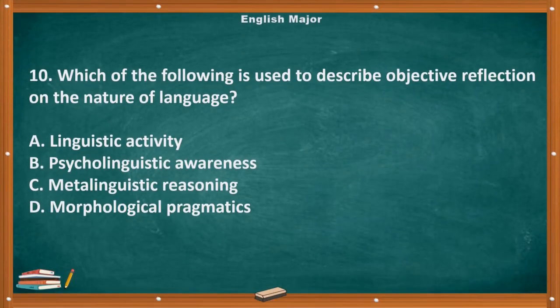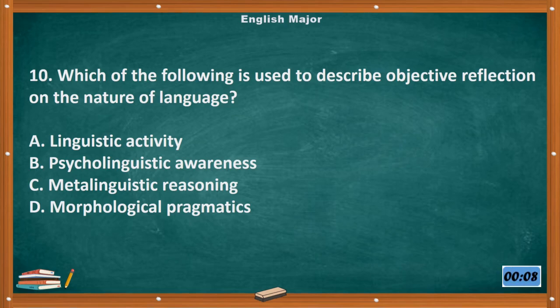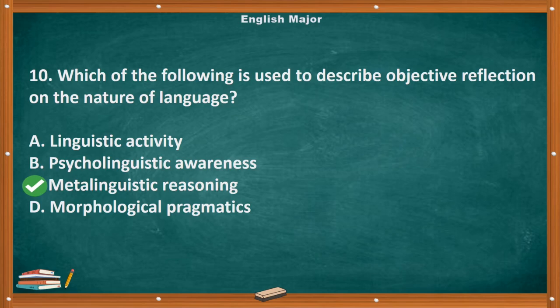Question number 10. Which of the following is used to describe objective reflection on the nature of language? A. Linguistic activity. B. Psycholinguistic awareness. C. Metalinguistic reasoning. D. Morphological pragmatics. The correct answer is letter C, Metalinguistic reasoning.